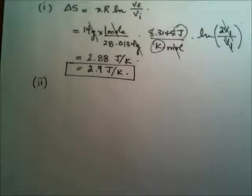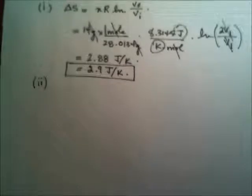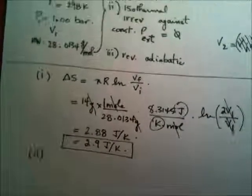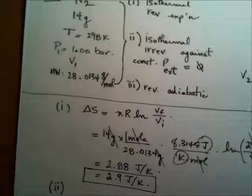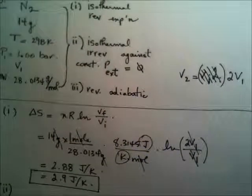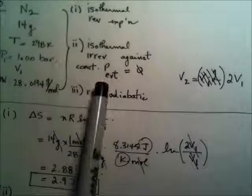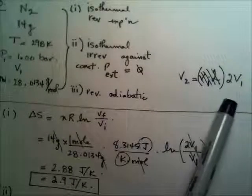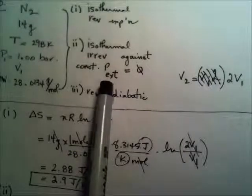So remember that the total has to be greater than 0 for spontaneous, and this is reversible, so it's kind of like equilibrium condition. And delta S total would be 0 in that case. So let's move to number 2. Let's slide back and read again. Well, that's okay. It was 2V1. So for the second path, we have an irreversible isothermal expansion, again to the same doubling effect. But this time, it is irreversible.